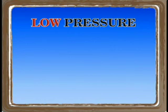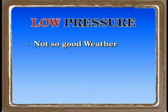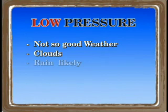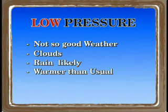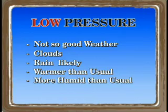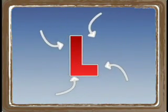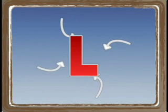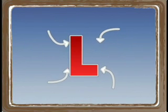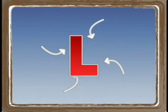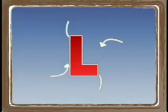A low pressure center means not so good weather. There could be some clouds, there could be some rain. It's going to be warmer and more humid than usual. And the rotation of the winds around a low pressure system is going to be counterclockwise and in toward the center of the low.